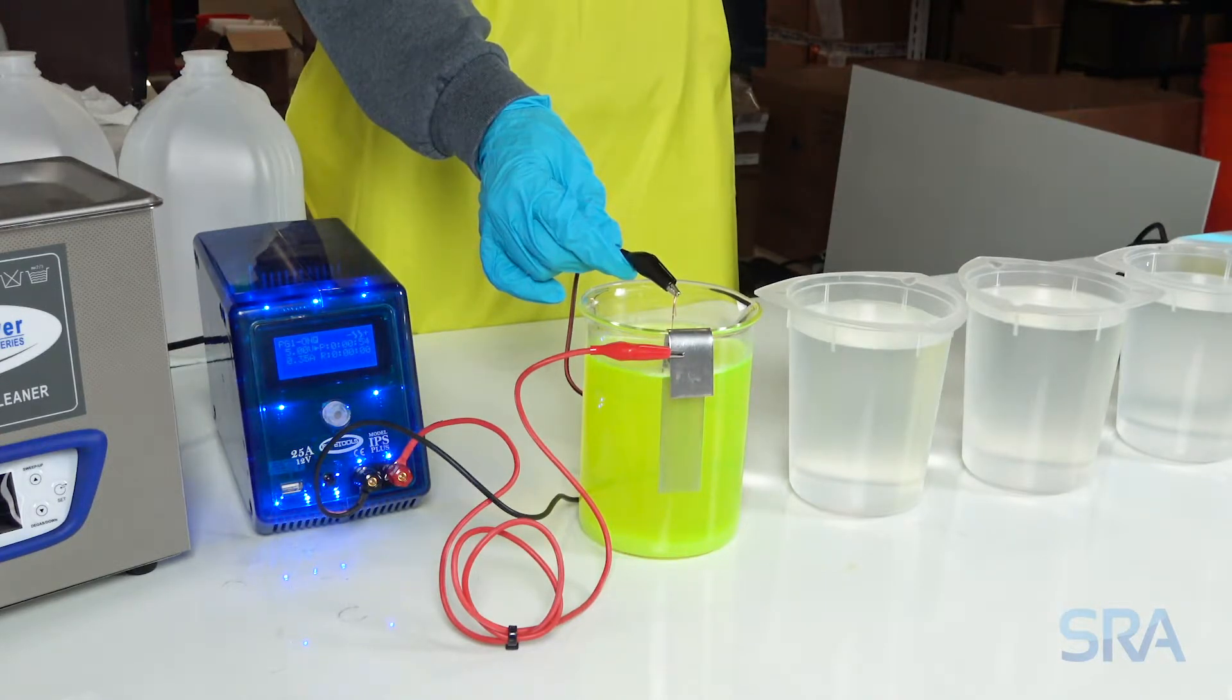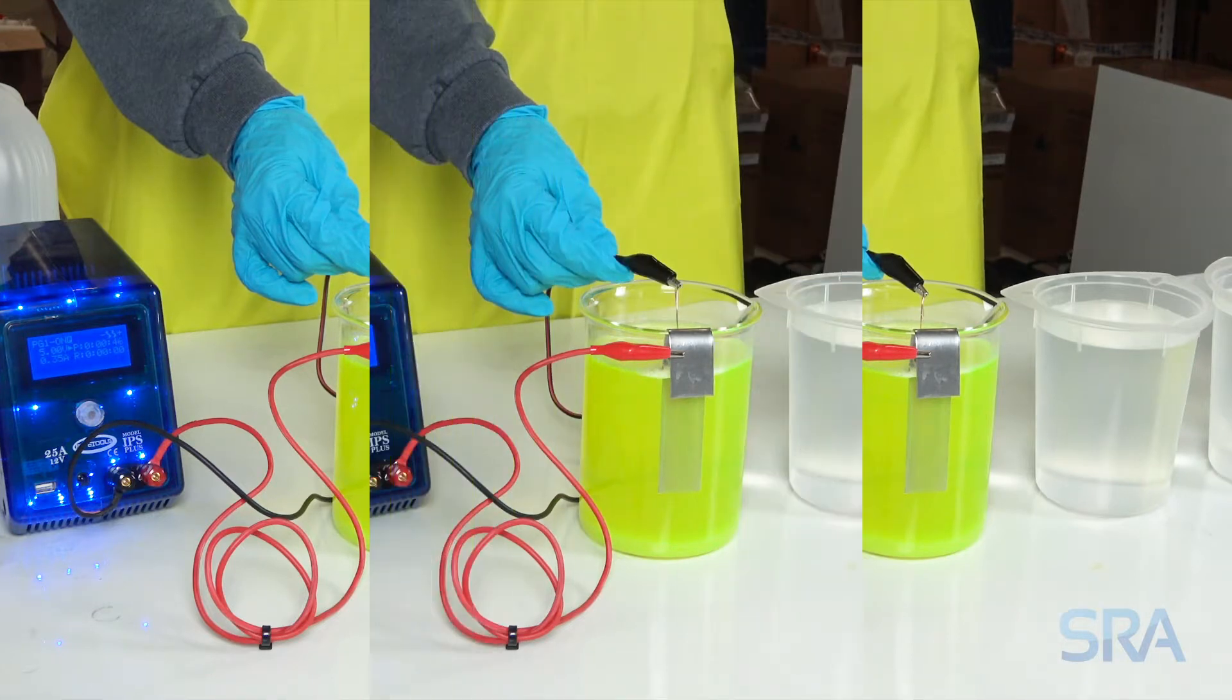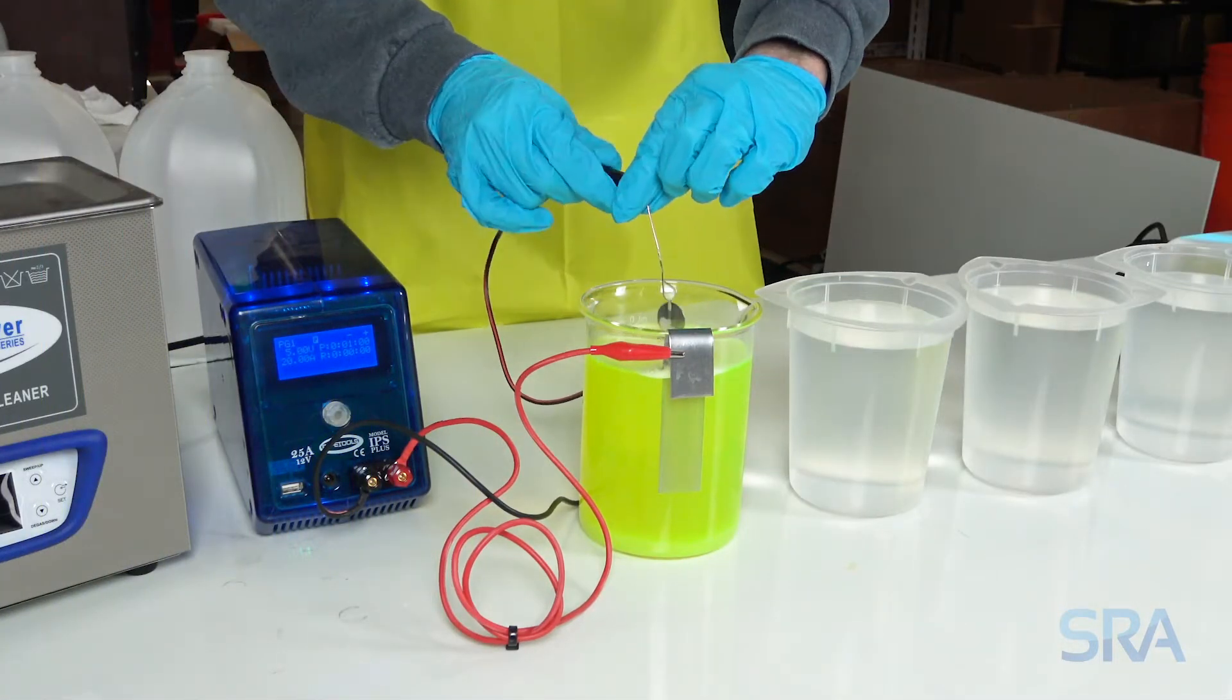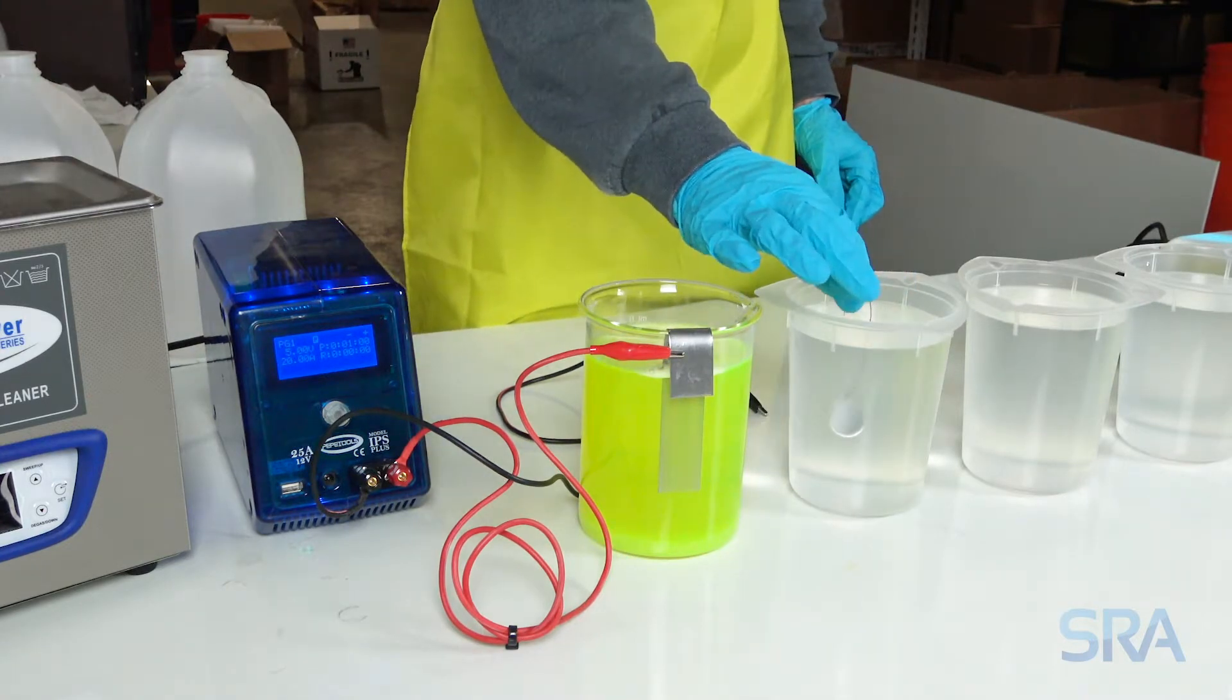This process removes any oil from the hands and polish to ensure the plating solution bonds well to the surface. Once completed, rinse in distilled water, then visually inspect the item for polish or oil and electro clean again if needed.